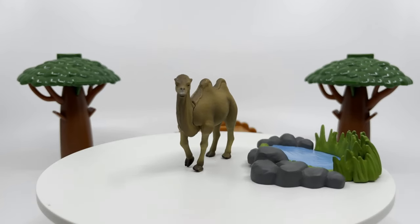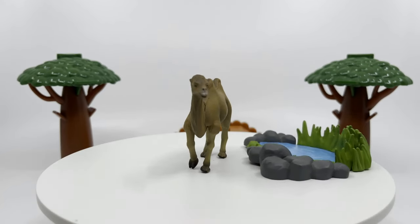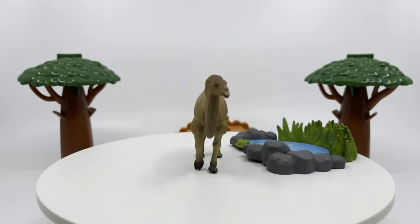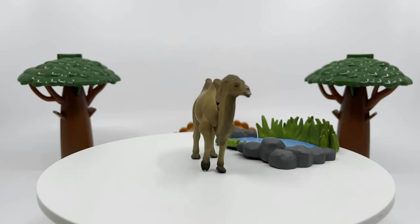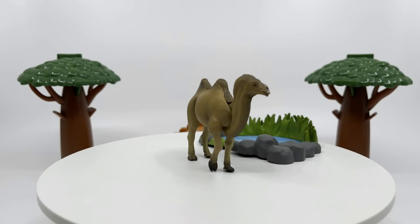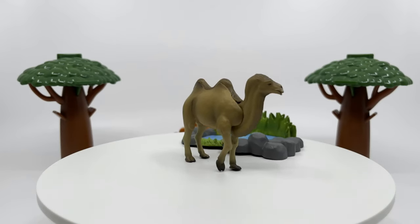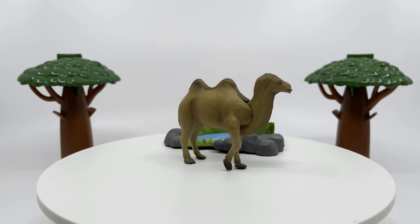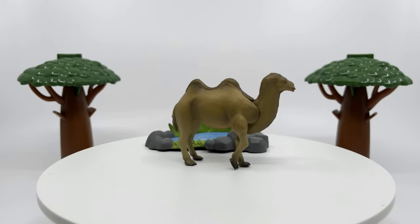There are three surviving species of camel. The one humped dromedary makes up 94% of the world's camel population, and the two humped bactrian camel makes up 6%. The wild bactrian camel is a separate species and is now critically endangered.